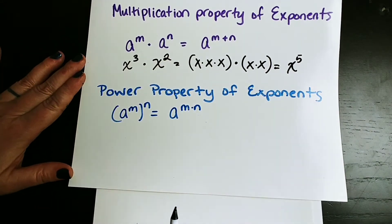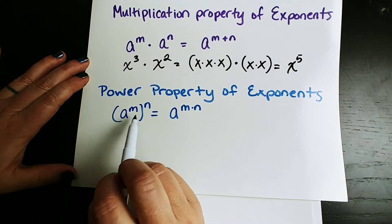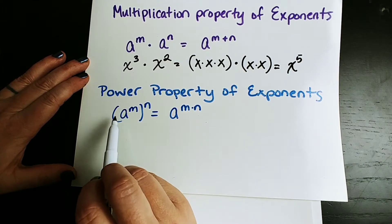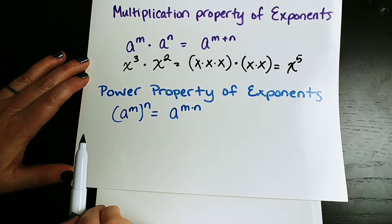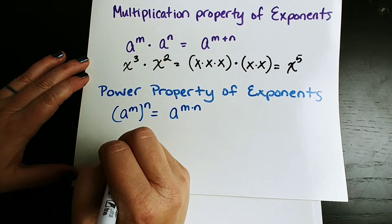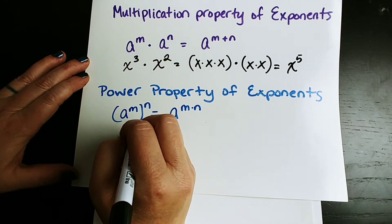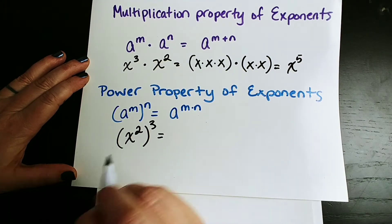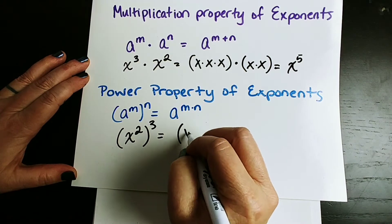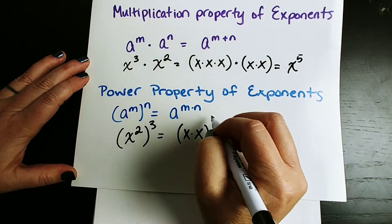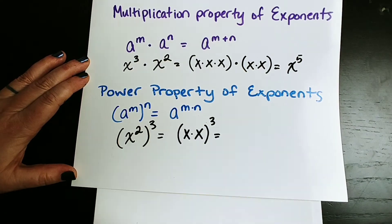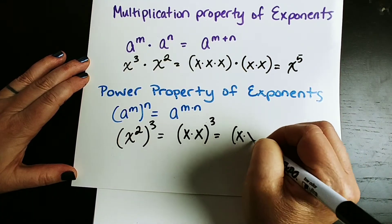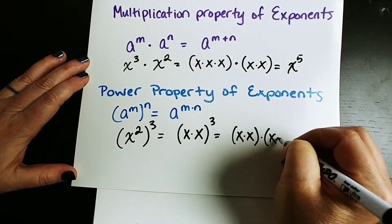Now the power property is slightly different. It's when something is already raised to a power and you're raising that entire quantity to another power. For example, let's say I have x squared and I am cubing that. Using expanded form: in the parenthesis we have x times x, and we are cubing that, so that means we have three groups of x times x.